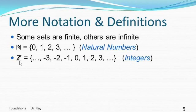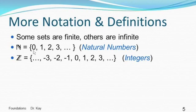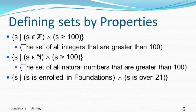We've already talked about the integers. I'm going to introduce the capital Z symbol for the integers, which your book also uses. There are also the natural numbers, represented by capital N. In your textbook, zero is part of the natural numbers — you may have learned otherwise, but for this class zero is a natural number. Some sets are finite while others, like these two, are infinite.